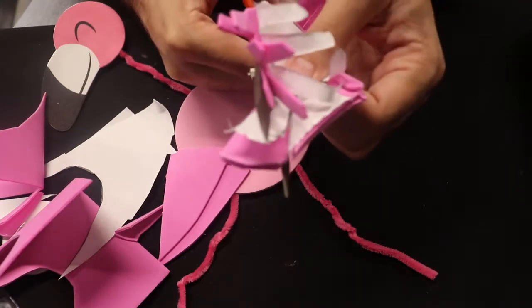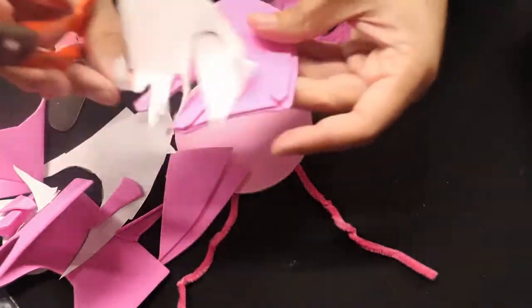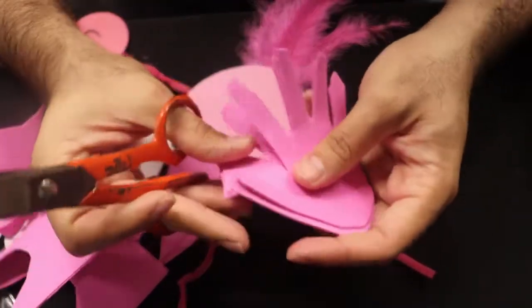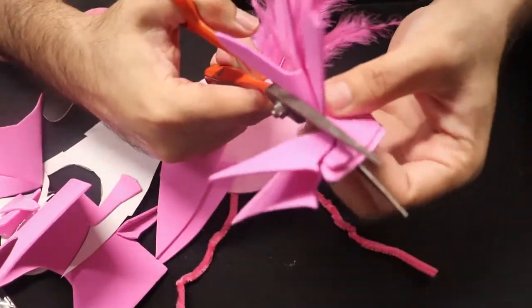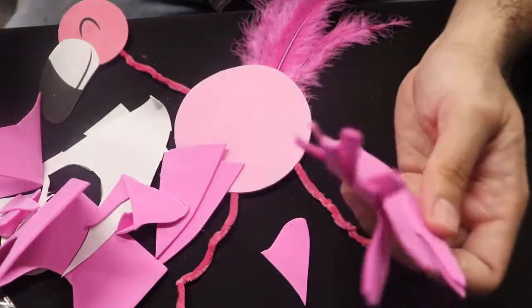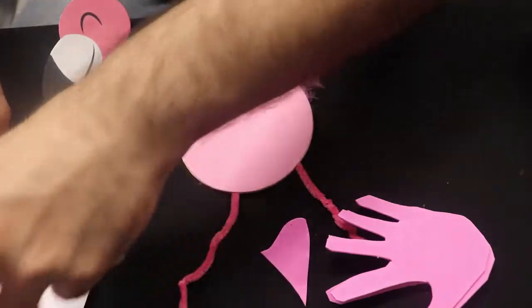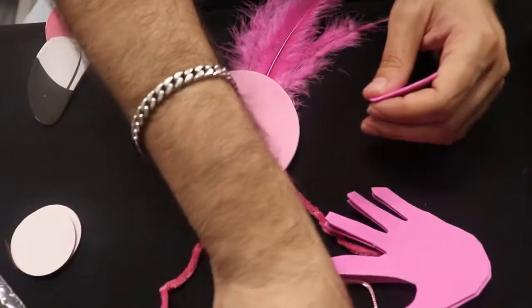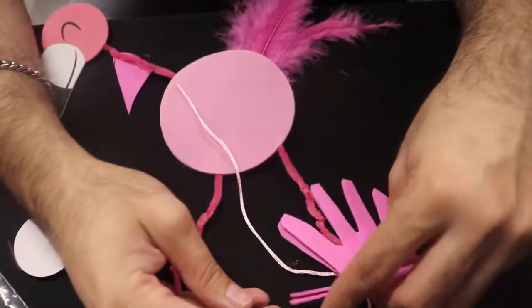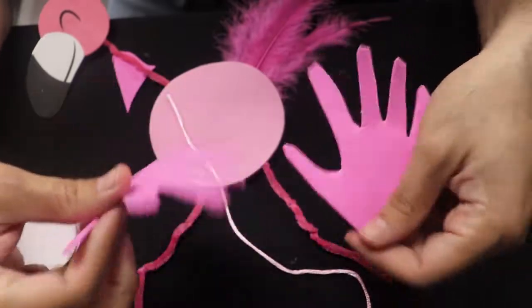Okay, I just need to cut out this little middle part right here. And done. There we go. Let me move all this stuff off to the side. So here are my little handprints, aka my flamingo feet.